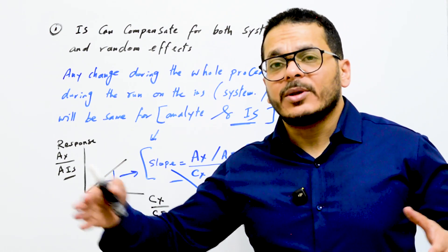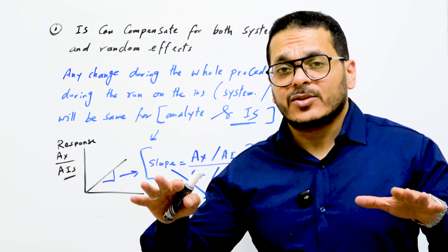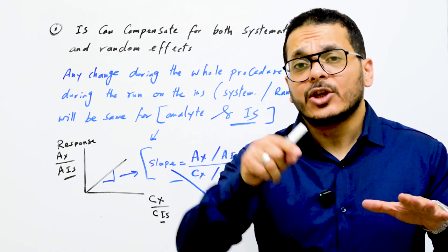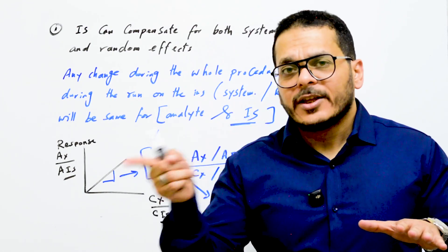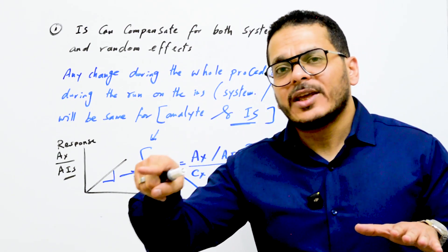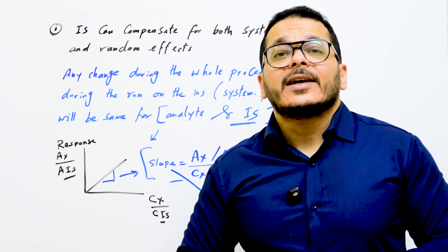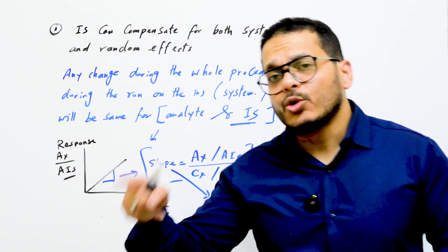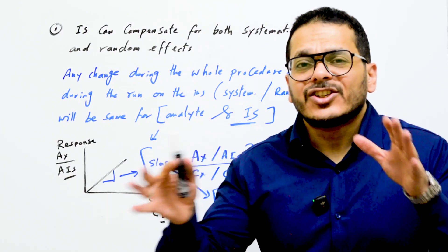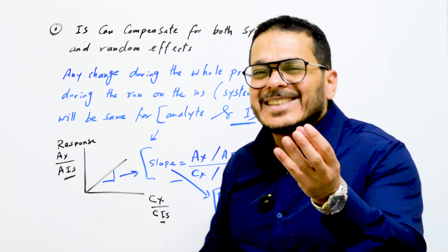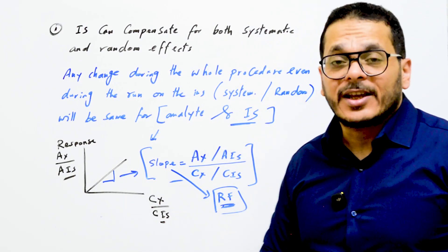If you add the internal standard from the beginning to the end, any systematic or random effect that happens — such as instrument fluctuation or any interfering factor — will affect the internal standard in the same way it affects the target analyte. So any systematic or random effect that happens to the internal standard will also happen to the target analyte.